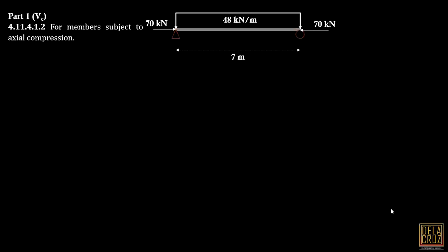For part 1, the nominal shear strength capacity of the concrete. In this section of the NSCP for members subject to axial compression. This is the orientation of our beam, simply supported with a 7 meter span, acted by a factored load of 48 kN uniformly factored load and axial compression at the cross section of the beam.